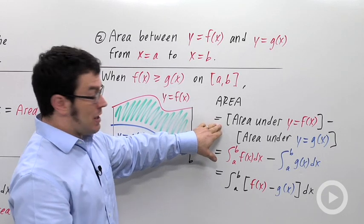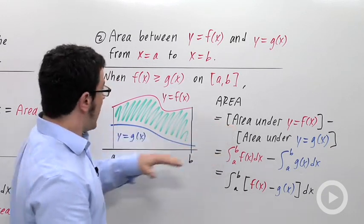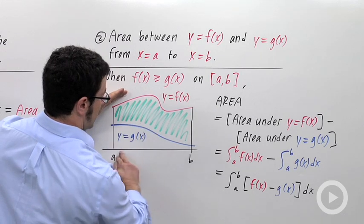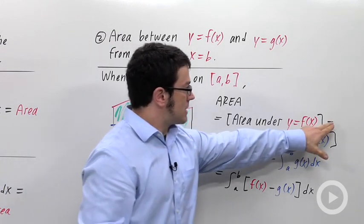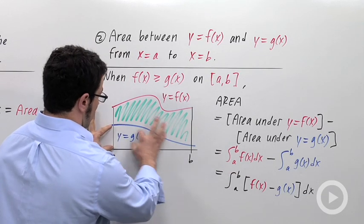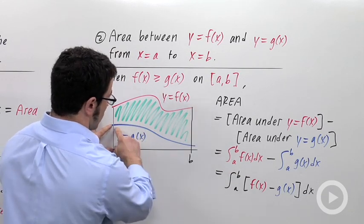is going to be equal to the area under y equals f of x. That's all the area under this curve and above the x-axis, minus the area under y equals g of x. That's this area here. So take the whole area, subtract this away,